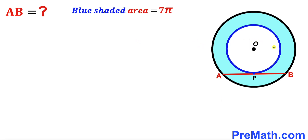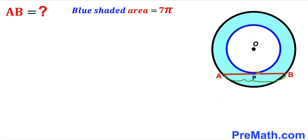In this video we have got these two concentric circles with a common center O, as you can see in this given diagram. As a result we get this blue shaded ring, and the area of this blue shaded ring has been given to us as 7π square units. Moreover, we have this segment AB that is tangent to the inner circle at point P, and our task is to calculate the value of this segment length AB.